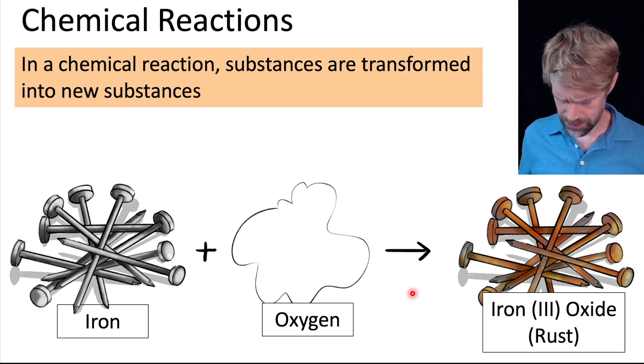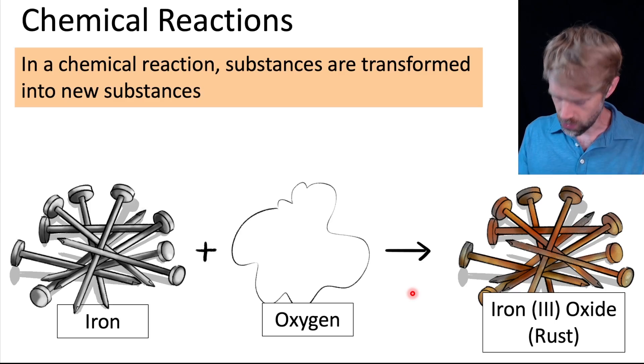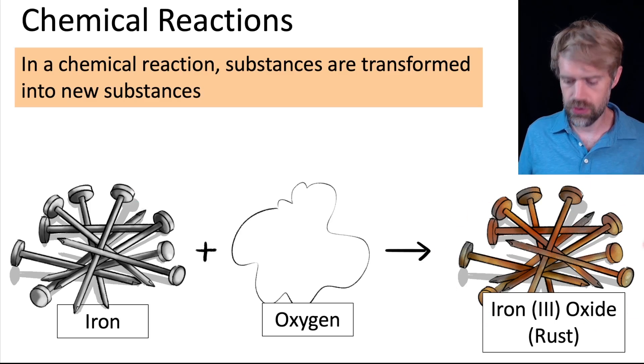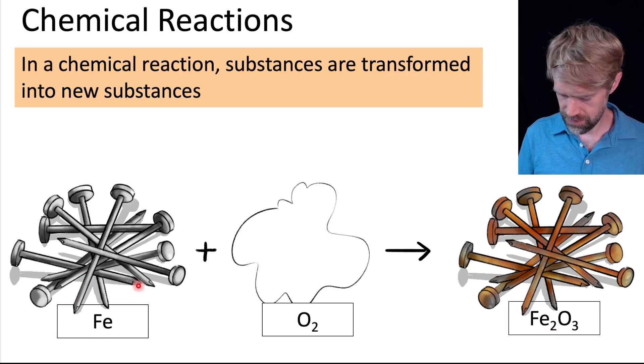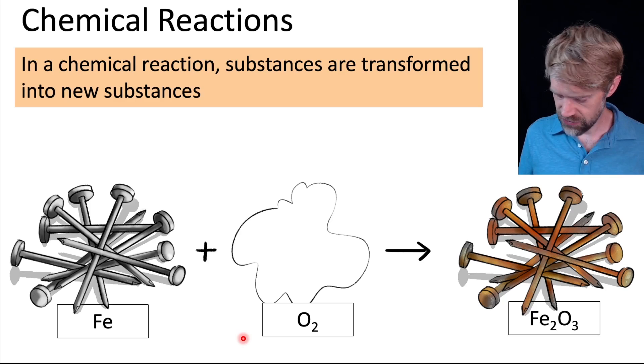Here's another example of a chemical reaction where two elements come together or react to form a compound. Here we have iron and oxygen gas. And they react together to produce iron 3 oxide, which is commonly known as rust. So, to look at some symbols here, the element iron is Fe and oxygen gas is O2. And the chemical formula for rust is Fe2O3.